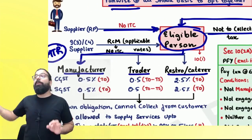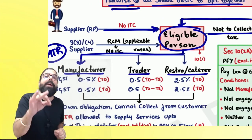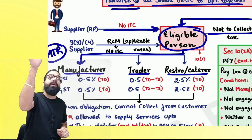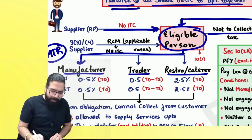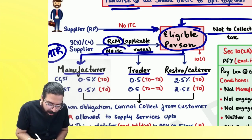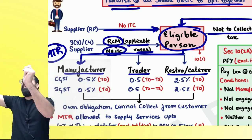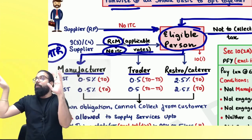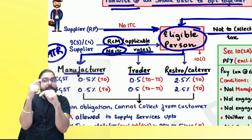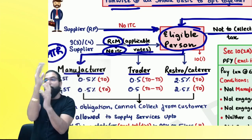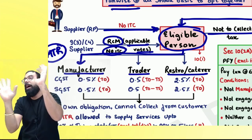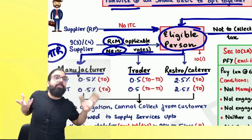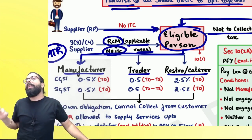Always remember: if you are taking services under RCM (like Section 9(3) or 9(4) services), you have to pay GST under RCM at the applicable rate — 18%, 12%, 5%, whatever is applicable — and you will not get any ITC. MTR people cannot take any ITC, cannot charge any tax on their supply. When they take RCM services, they pay GST at the applicable rate.